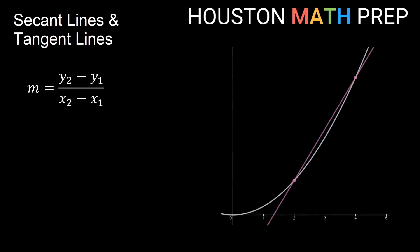Remember the slope formula from algebra? If we have two points, x1, y1 and x2, y2, the slope of this line is going to be the change in y over the change in x, or y2 minus y1 over x2 minus x1.